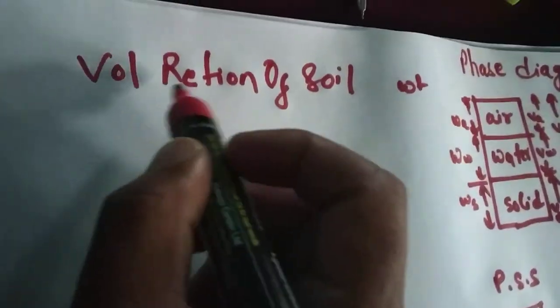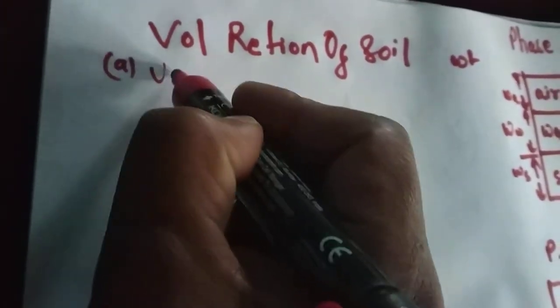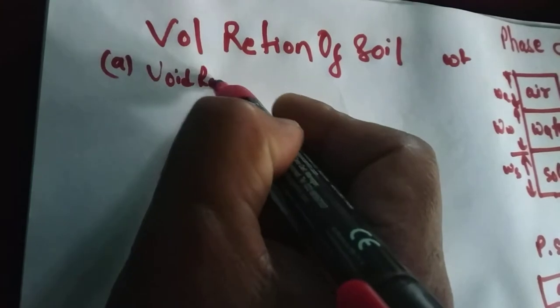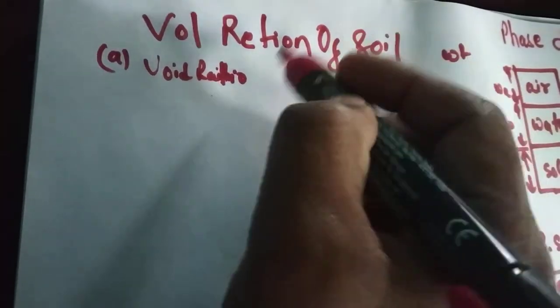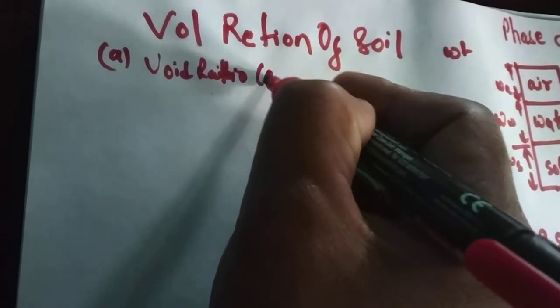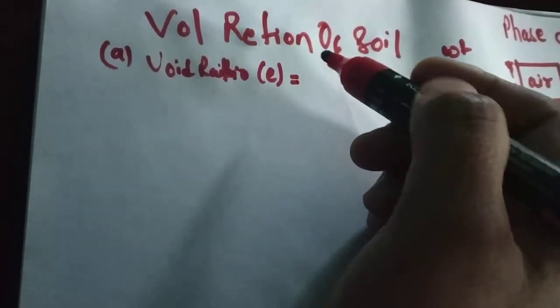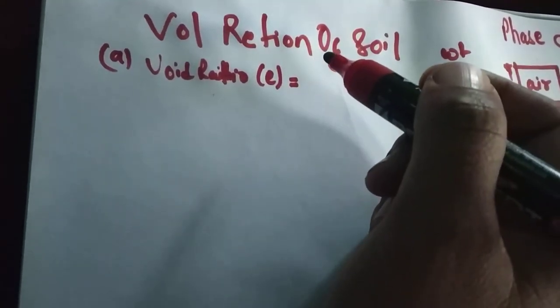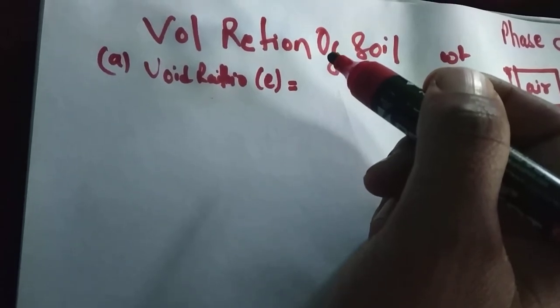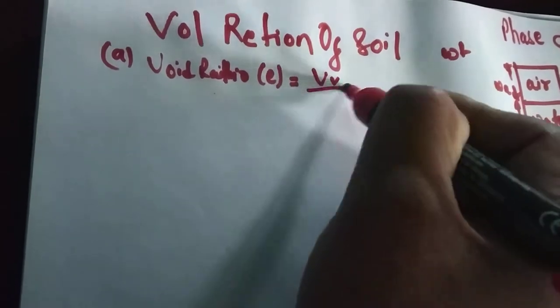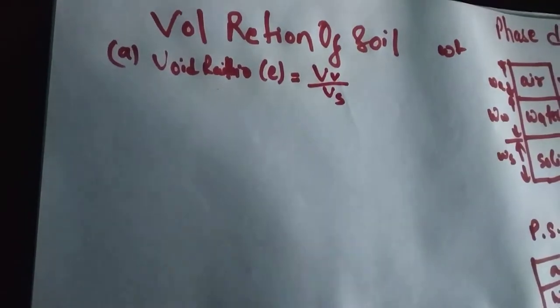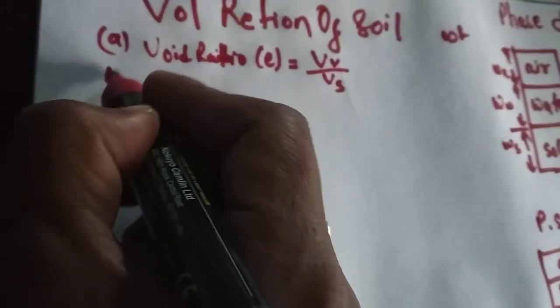Volume relations of soil: first, void ratio. Void ratio can be represented by E and is the ratio of volume of void containing air, water, or other fluid to the volume of solid. Porosity, N, equals volume of void to the total volume.